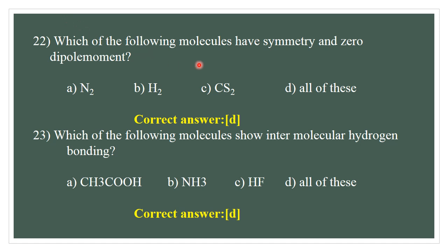Question number 22. Which of the following molecules have symmetry and zero dipole moment? N₂ has a center of symmetry. H₂ has a center of symmetry. CS₂ has a center of symmetry and zero dipole moment. All three molecules have symmetry and zero dipole moment. The correct answer is D — all of these.